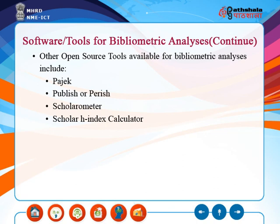Scholar H-Index Calculator is an add-on for Google Chrome and Firefox which enhances Google Scholar results pages by showing a number of bibliometric data computed using the data appearing on the page as input. Once installed, the add-on displays on the top of Google Scholar result pages the corresponding H-Index, G-Index, E-Index, and other measures of impact for the submitted query. Features include the ability to select or deselect a single paper, manually increase or decrease the number of self-citations, adjust the number of authors for a given paper, and load and save data.